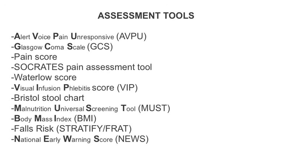Throughout the assessment framework, you should be able to prioritise and rationalise the use of any assessment tools. Common tools include AVPU and Glasgow Coma Scale for neurological assessment. Pain scores may include a 0-3 or 0-10 scale. The Socratives pain assessment tool may be used to assess cardiac pain. The Waterlow score is used to assess skin integrity. The VIP score can be used to assess any IV lines. The Bristol Stool Chart can be used to assess bowel habits. The MUST tool can be used to assess dietary needs. BMI can be used to determine a patient's weight in relation to their height.